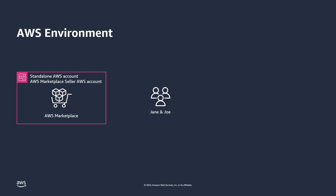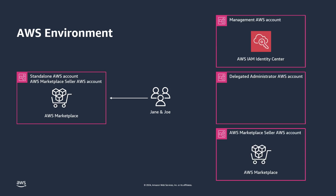You'll also want to group Jane and Joe to manage their permissions centrally and make sure any new people added to that group will have the same required permissions. If you only have one standalone account, you will do this by creating credentials and assigning permissions in this account. If you have a multi-account environment set up with AWS Organizations, you can use your delegated administrator account. In this video, we will depict the multi-account environment and set everything up using AWS IAM Identity Center. Let's get started.